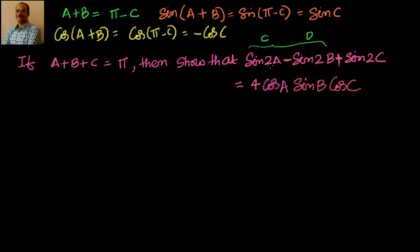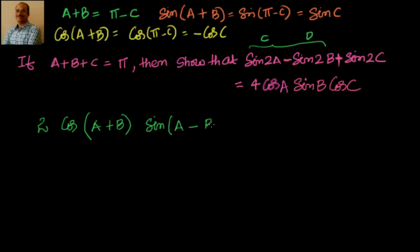Sin2a minus sin2b — this is nothing but sinC minus sinD. The formula for that is 2cos((2a+2b)/2) · sin((2a-2b)/2), which gives 2cos(a+b) · sin(a-b). Similarly, sin2c is best written as 2sinC cosC. Now, looking at what we can take common — I see sinC equals sinC, but sinC is not directly there.